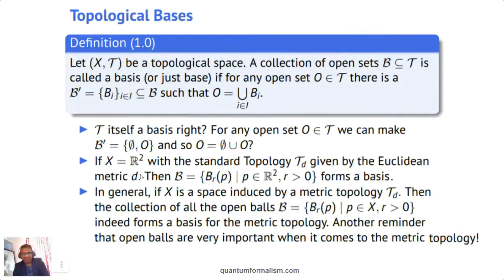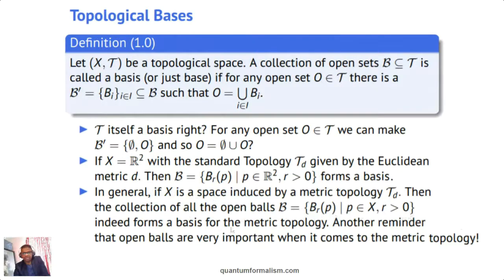A more interesting example: if X is R2 equipped with the standard topology induced by the Euclidean metric d, then the claim is that the set of all open balls in R2 forms a basis. You can start to see why open balls are very important in the metric topology, because in general, given any metric space, the collection of all open balls on the metric space indeed forms a basis for the metric topology.